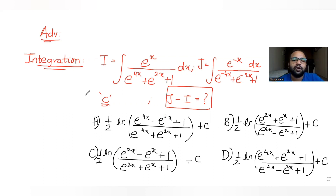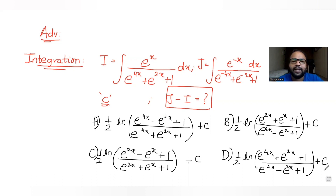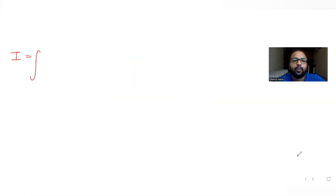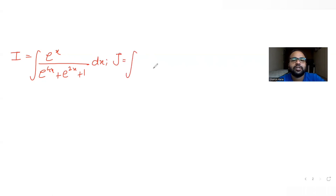So these are the four options given to us for this value of J minus I. Let's try to find this expression for J minus I and then we'll match it with the four options. So if I try to solve I and J, I can write the I expression as integral of e raised to x upon (e raised to 4x plus e raised to 2x plus 1) dx, and J as integral of e raised to minus x upon (e raised to minus 4x plus e raised to minus 2x plus 1).